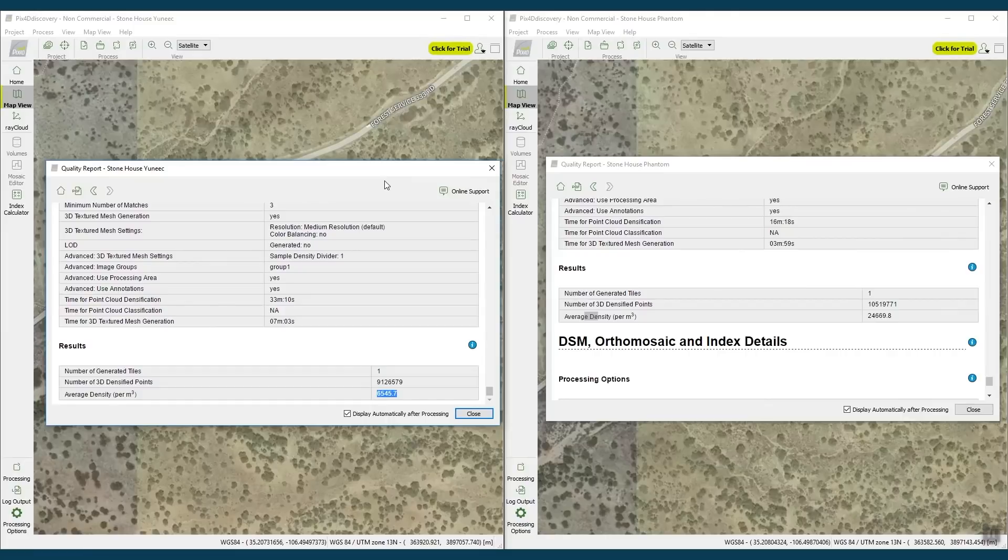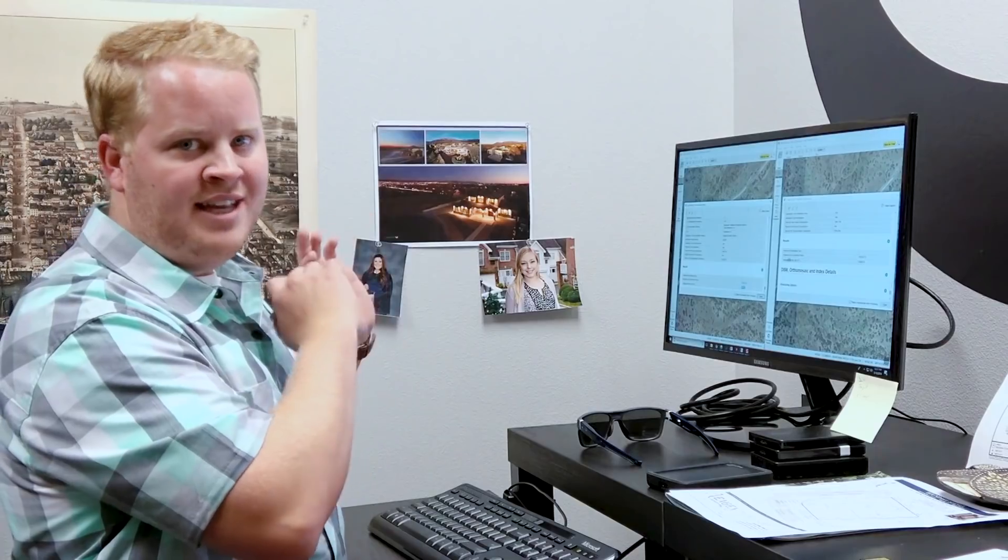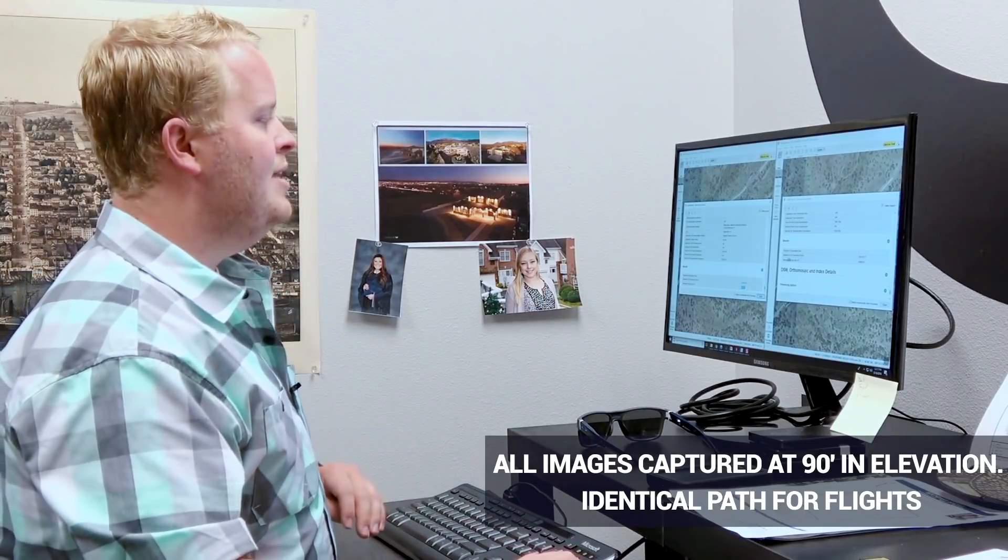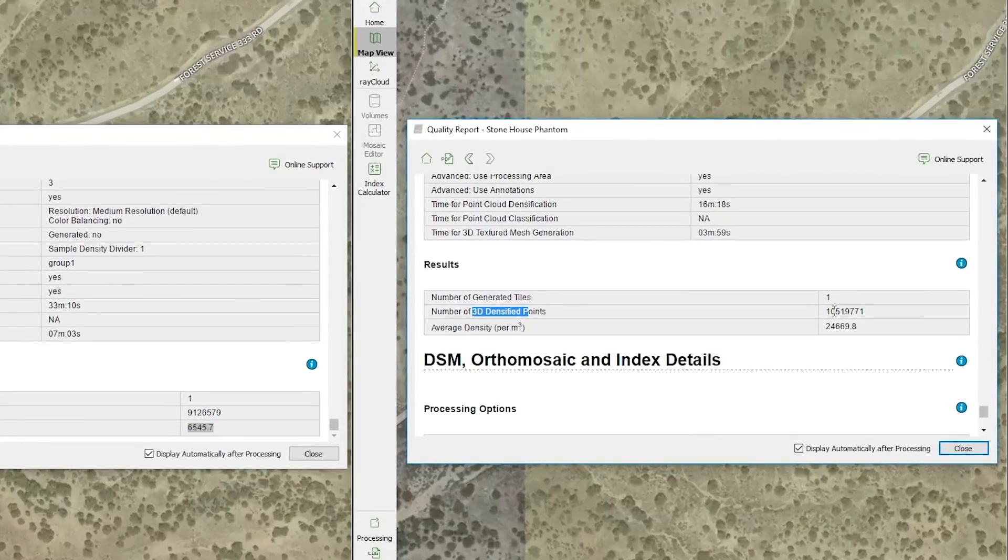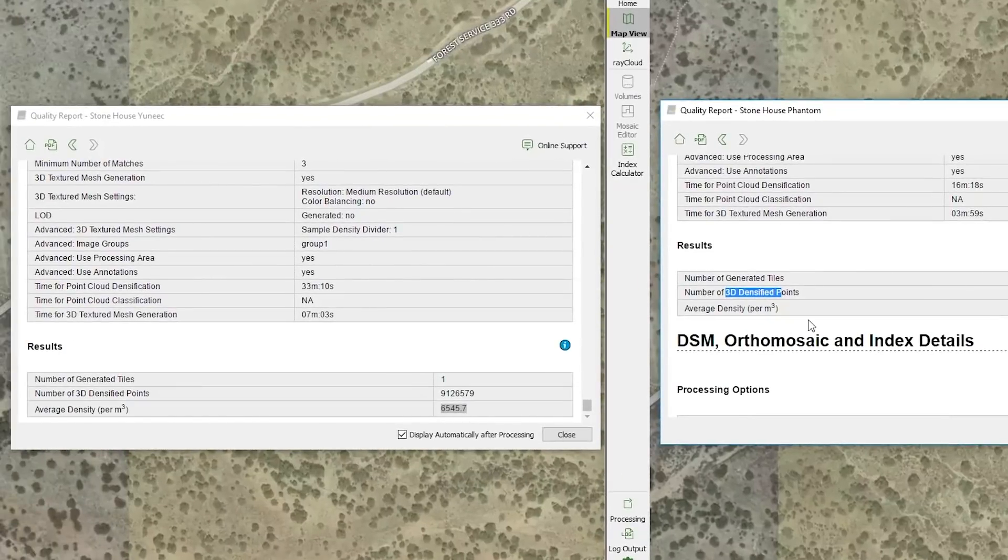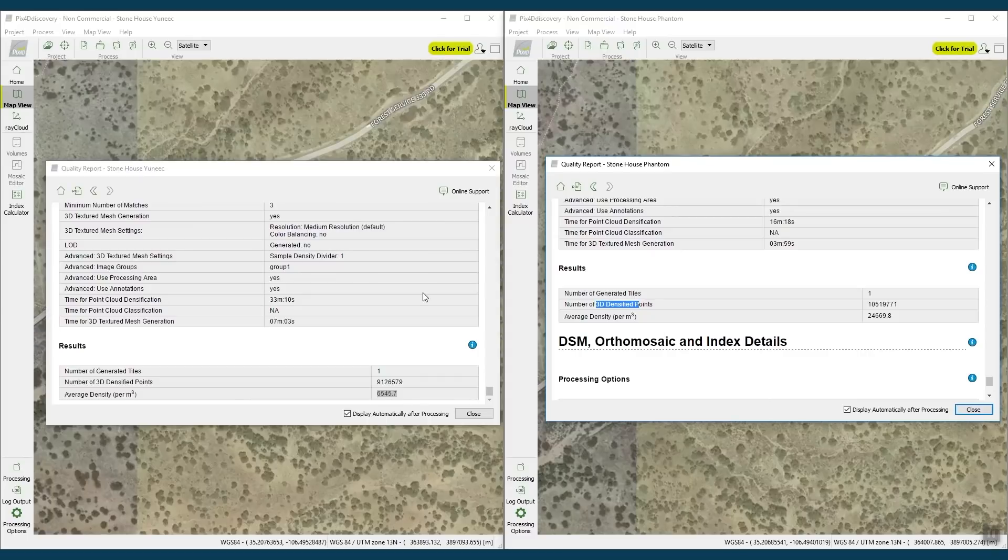I did rerun the Yuneec data with new information. I ran both maps at the exact same systems, the exact same templates and settings in PIX4D to do a true comparison. When I look at the number of 3D densified points on my Phantom map, I've got 10.5 million versus 9.1 million in my Yuneec map. But also if we take a look at the average number of points per square meter, in the Phantom we have 24,669 versus 6,545 in the Yuneec. So I was wondering, what is going on? Why are these maps so different? Why is the data so different?